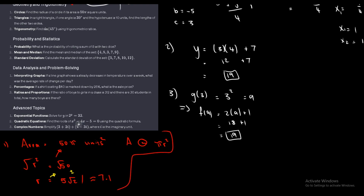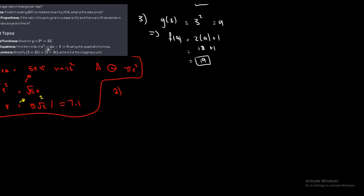Let's look at number two. In a right triangle, if one angle is 30 degrees and the hypotenuse is 10, find the lengths of the other two sides. We want to draw a little picture. We can place the 30-degree angle on either side since it's not specified. The hypotenuse is 10. Since we're given an angle, a right angle, and a hypotenuse, we'll use trigonometry. Let's assign the other two sides as x and y.